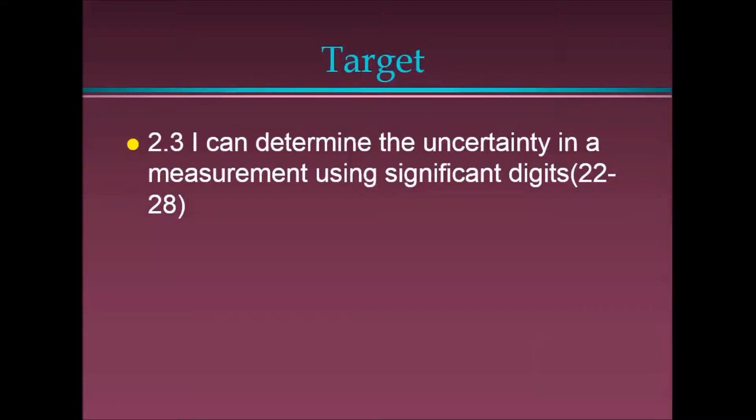More often than not, in chemistry, we are going to be measuring things with instruments. Those instruments have different levels of precision. They'll go to different levels of magnitude, whether that is to the ones place, or to the tenth place, or to the hundredth place, or to the thousandth place. How many digits do we record? Well, we have to record as far as the instrument tells us. Those digits are called significant digits. And that's what we're going to focus on in this lesson.